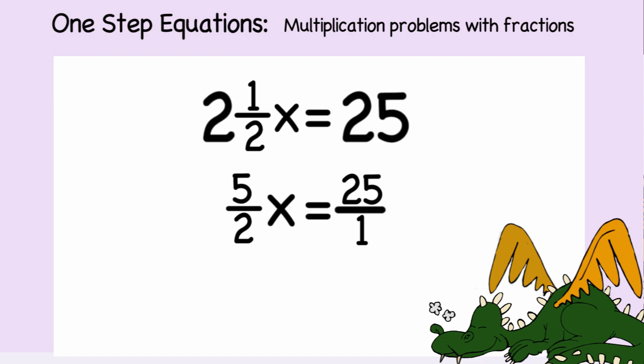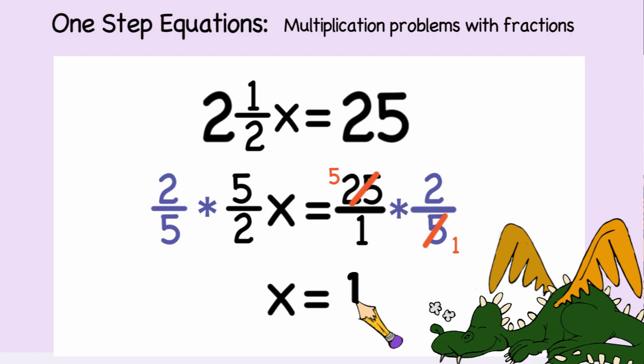Multiply each side of the equation by the multiplicative inverse, which is two-fifths. 25 times two-fifths is equal to 10, so x is equal to 10.